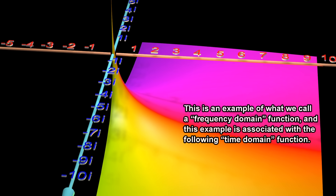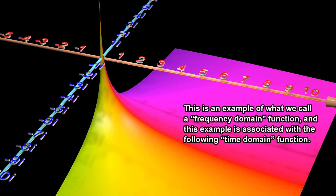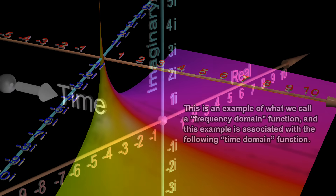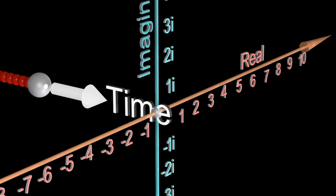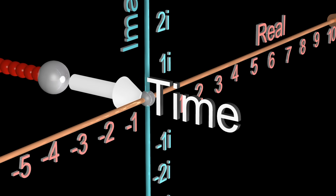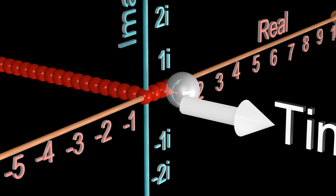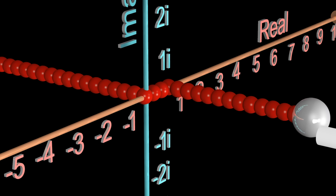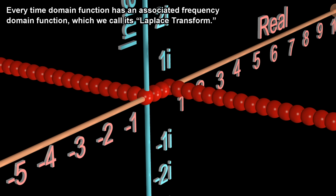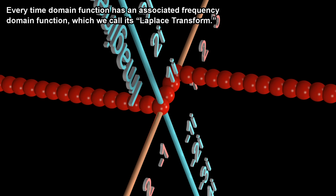This is an example of what we call a frequency domain function. And this example is associated with the following time domain function. A time domain function is simply a function of time. Every time domain function has an associated frequency domain function, which we call its Laplace transform.